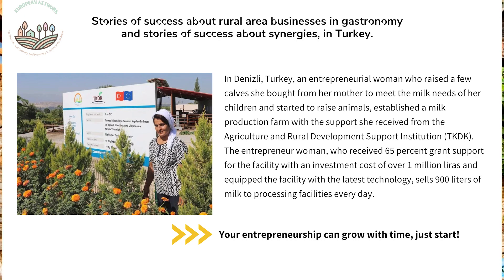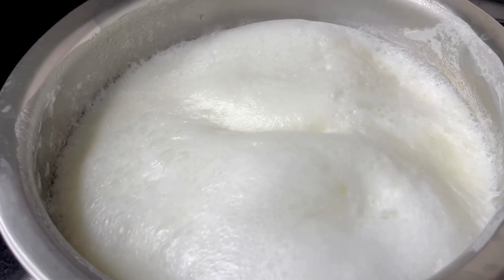Here are some inspirational stories of rural area business success in gastronomy and synergies in Turkey. The first story is from Denizli, Turkey. An entrepreneurial woman who raised calves she bought from her mother to meet the meat needs of her children started to raise animals. She established a meat production farm with support she received from agriculture and rural development support institutions. The entrepreneur woman received 65% grant support for the facility with an investment cost of over one million euros and equipped the facility with the latest technology. She also sells 900 litres of milk to processing facilities every day. What we can deduce from this story is that your entrepreneurship can grow with time — the important thing is to start.